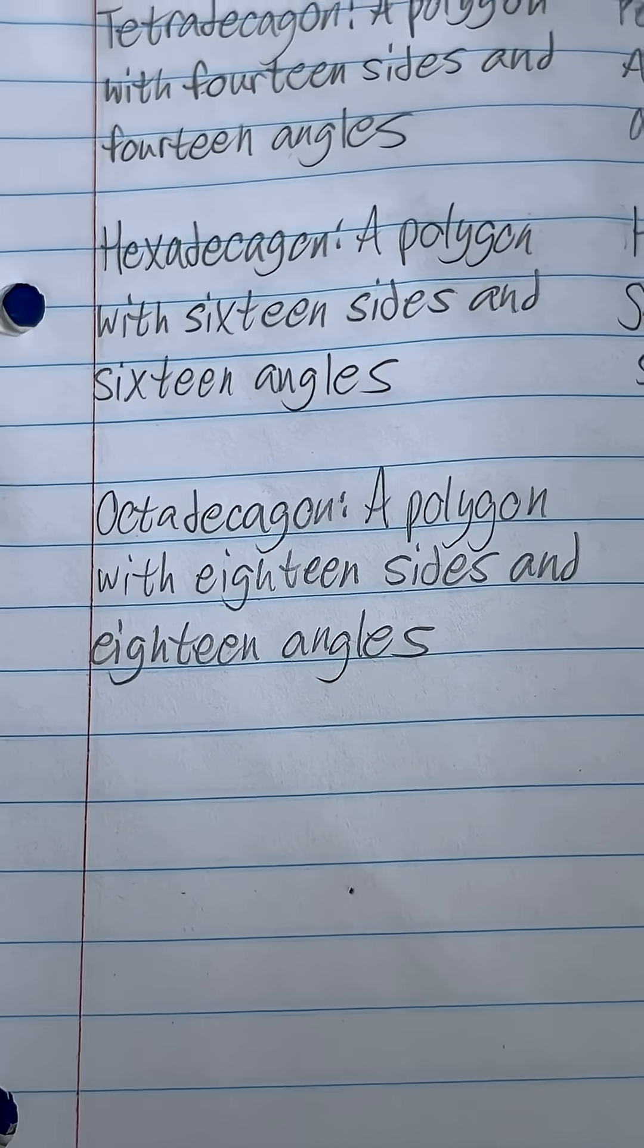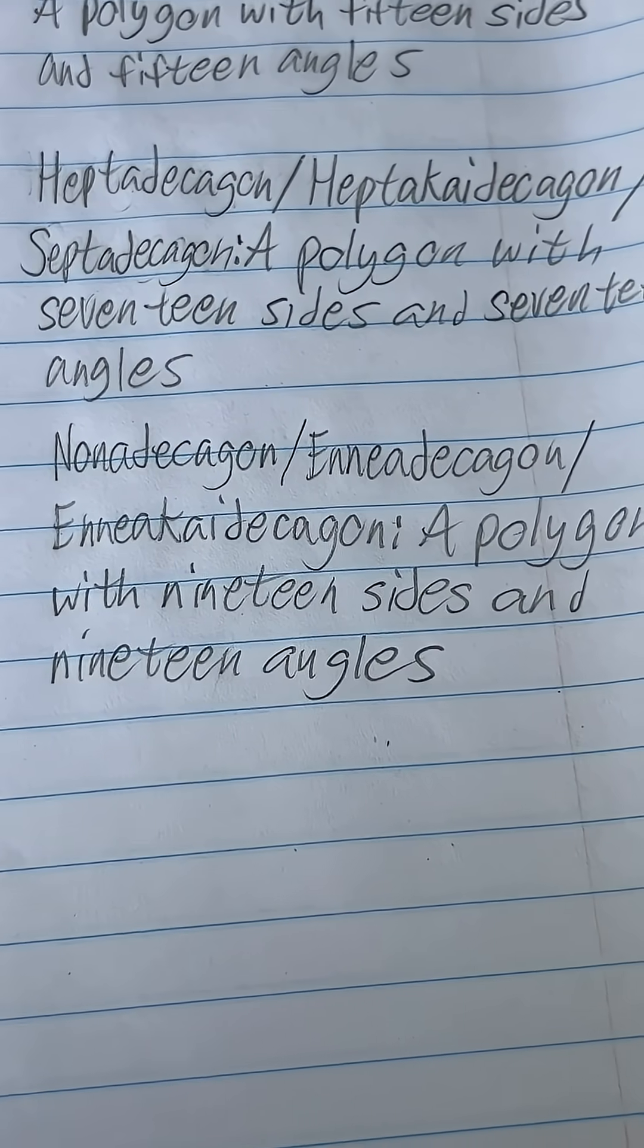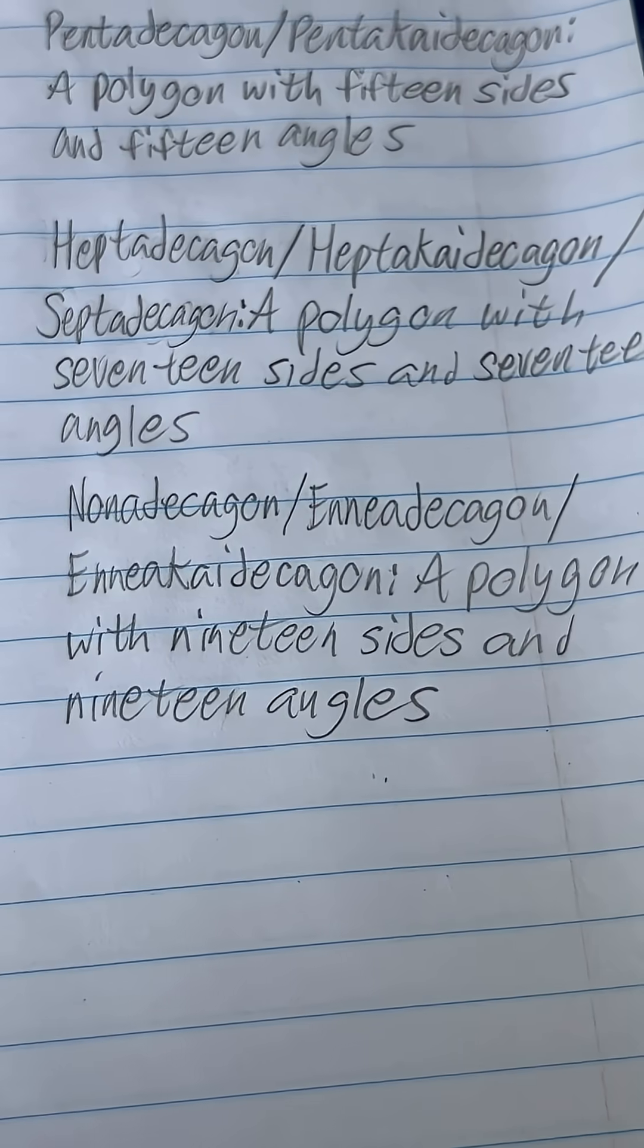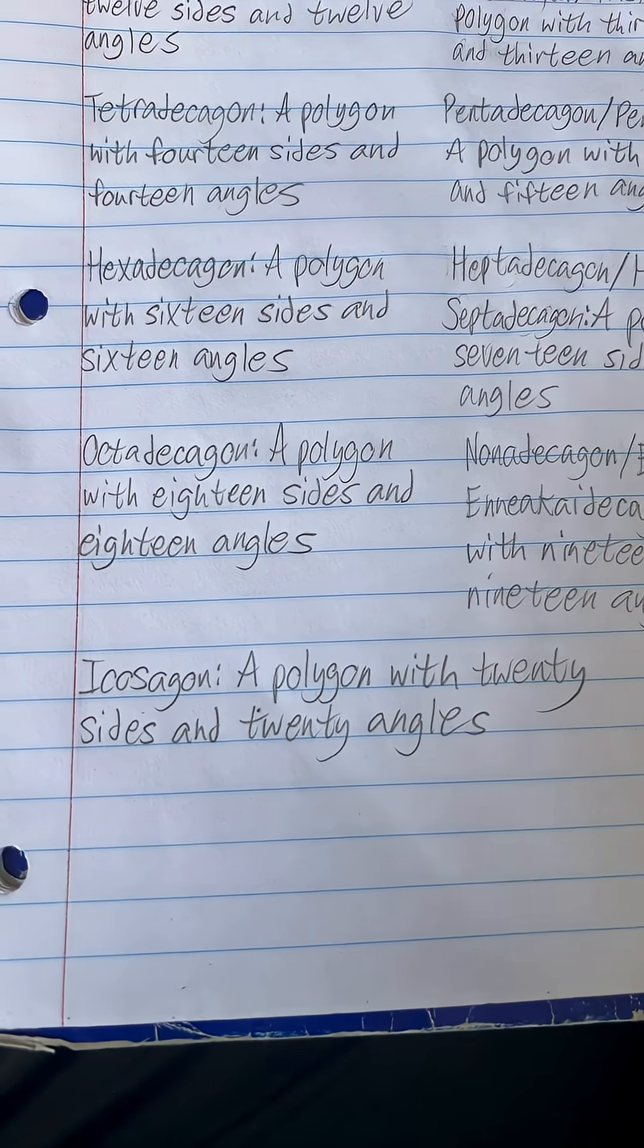An octadecagon is a polygon with 18 sides and 18 angles. And a nonadecagon, enneadecagon, enneakisdecagon is a polygon with 19 sides and 19 angles. And finally, an icosagon is a polygon with 20 sides and 20 angles. All of this information is both completely useless to me and you, but it's fun to know nonetheless. And let's watch the list.